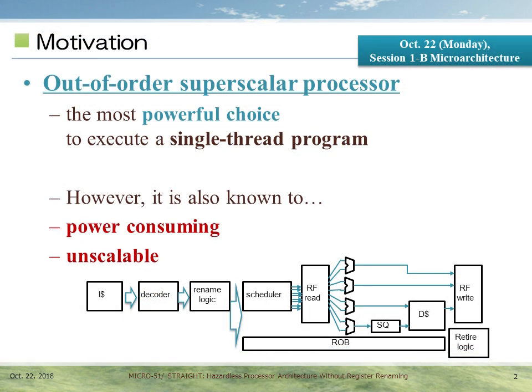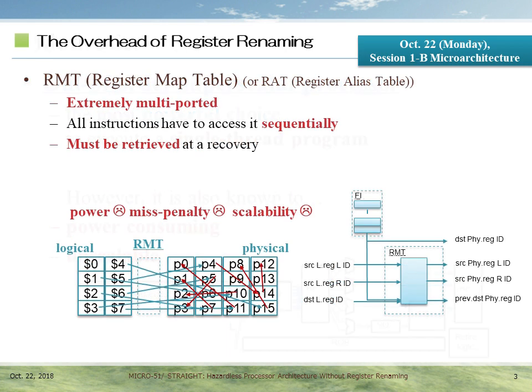So today, to execute a single-state program, the most powerful choice is an out-of-order superscalar processor. However, such a processor is also known to be power-consuming and is often said to be unscalable. One of the major reasons is register renaming. It requires an extremely multi-ported RAM called RMT, and all instructions have to access it in order.